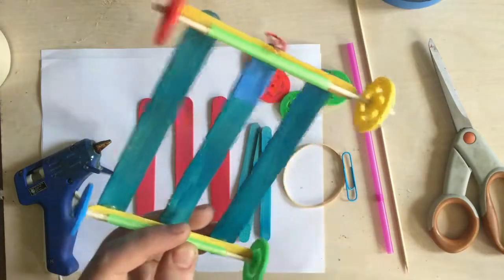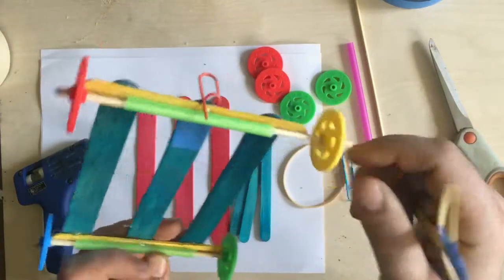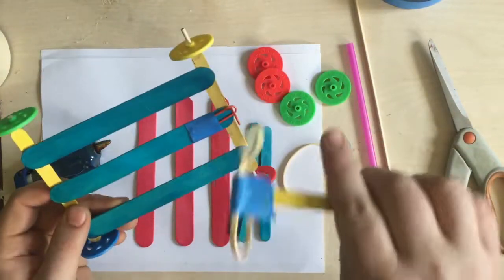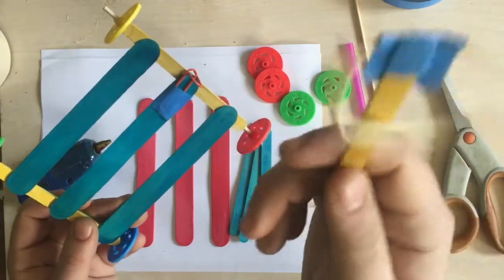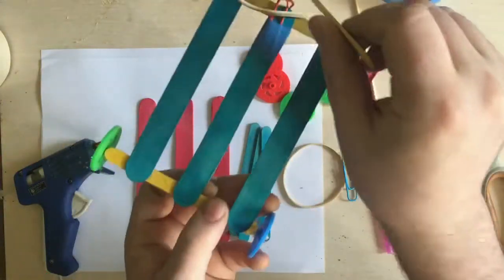It has plastic wheels and axles made of wooden skewers, and then we use a slingshot that uses a rubber band and a popsicle stick hooked onto a paper clip to actually launch and move the car.